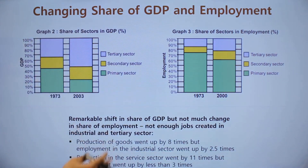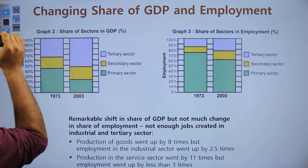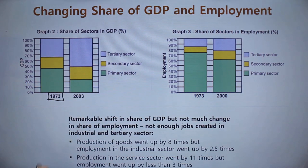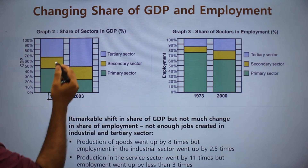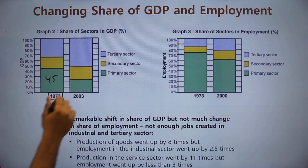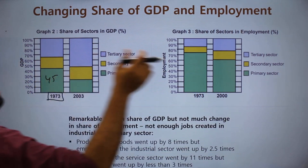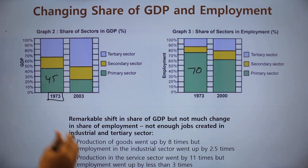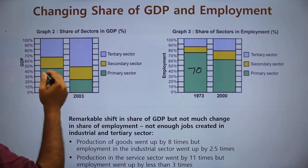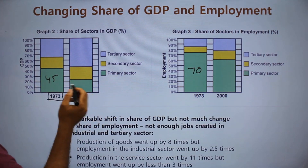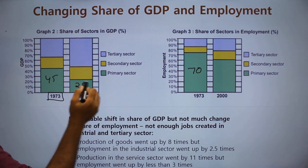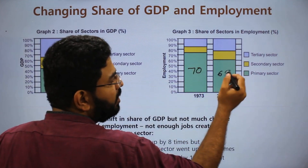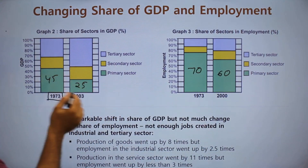We can see a stark difference: in 1973, the primary sector had around 45% share of total GDP, and in terms of employment the share was close to 70%. By 2003, the primary sector's GDP share fell to close to 25%, but employment had not fallen below 60% — still very high even though its GDP share had reduced.